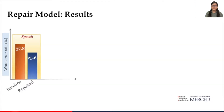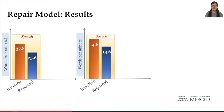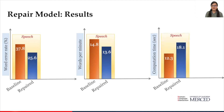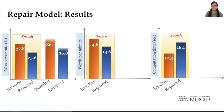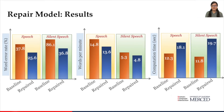Results showed substantial improvement in the performance of all speech and silent speech recognition models. On average, speech models showed a 32% reduction in error rate, an 8.1% reduction in words per minute, and a 5.8-second increase in computation time. Whereas silent speech models showed a 57.2% reduction in error rate, a 10.3% reduction in words per minute, and a 7.9-second increase in computation time.